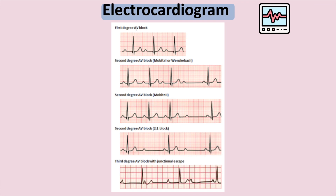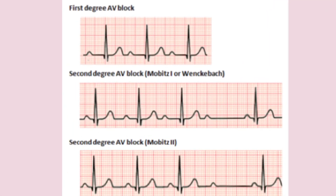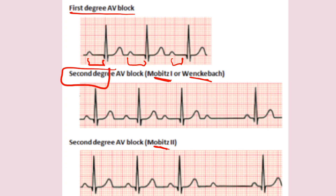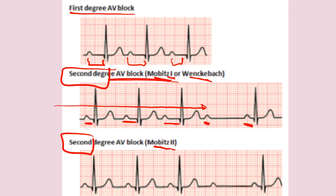Now for the ECG findings in AV blocks. In first degree AV block, there is constant prolongation of the PR interval. In second degree AV block, there are two types: Mobitz type 1, also called Wenckebach phenomenon, and Mobitz type 2. In Mobitz type 1, there is progressive prolongation of the PR interval until one P wave is not conducted, then the cycle starts again.